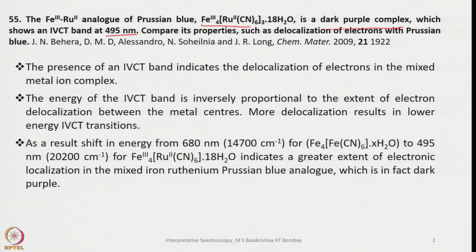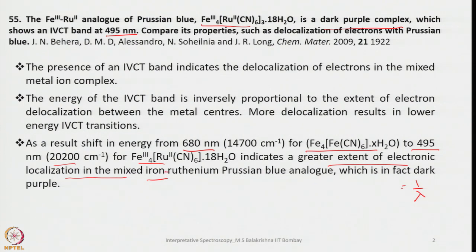As a result of delocalization, the shift in energy: for Prussian blue the band is at 680 nm, which corresponds to approximately 14,700 cm⁻¹ (wavenumber = 1/lambda). Here, for the mixed iron-ruthenium system, it is at 495 nm, corresponding to 20,200 cm⁻¹. This indicates a greater extent of electronic delocalization in the mixed iron-ruthenium analog, which is dark purple. Delocalization is more extensive compared to pure Prussian blue, and as a result the energy required for transition is much lower.